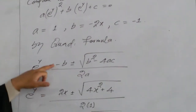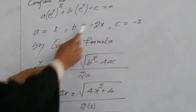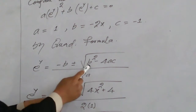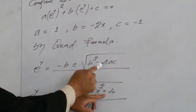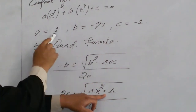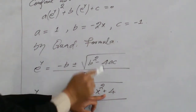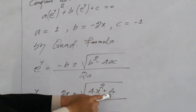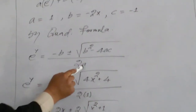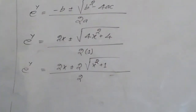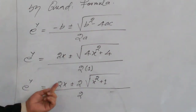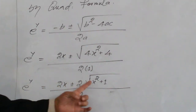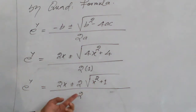Applying the quadratic formula, where a equals 1, b equals minus 2x, and c equals minus 1: e raised to the power y equals 2x plus or minus the square root of 4x squared plus 4, all divided by 2. This gives e raised to the power y equal to 2x plus or minus 2 times the square root of x squared plus 1, divided by 2.